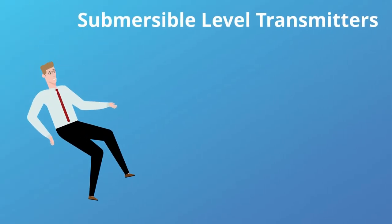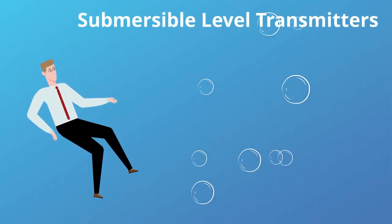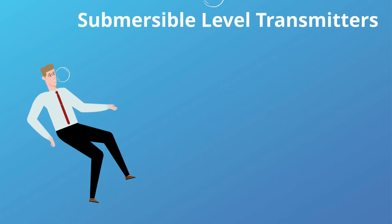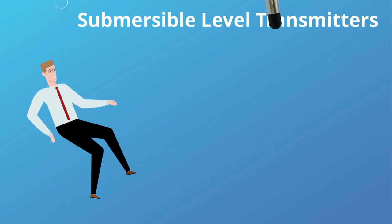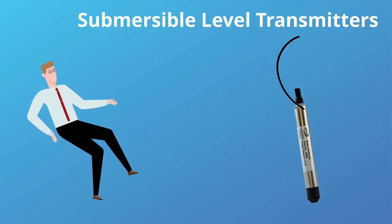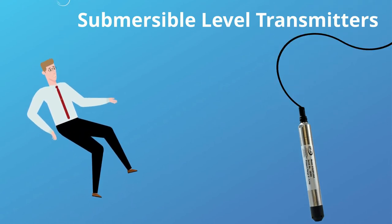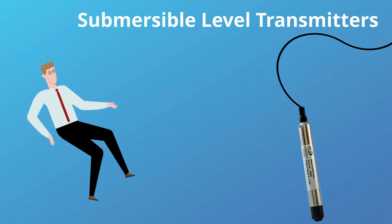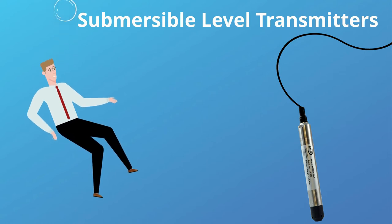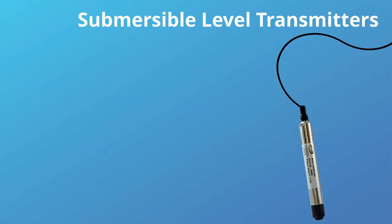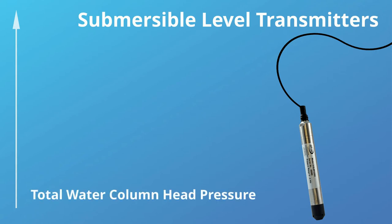Utilizing a submersible level transmitter, the transmitter is lowered into the tank or well by the connected cable down to the bottom, or just off the bottom of the tank or well floor. The distance from the sensor's face to the top of the liquid is the total water column head pressure you will measure.